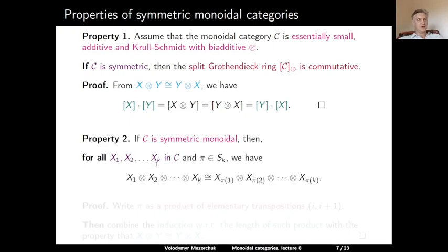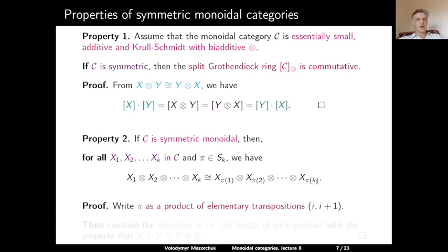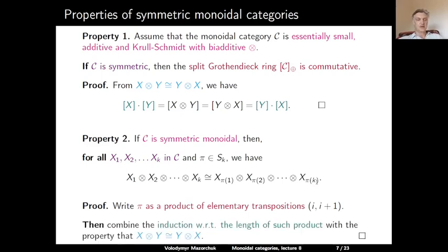Property two: if C is symmetric monoidal, then for any objects X1, X2, ..., XK in C and any permutation pi in S_K, the tensor product X1 ⊗ X2 ⊗ ... ⊗ XK is isomorphic to X_{pi(1)} ⊗ X_{pi(2)} ⊗ ... ⊗ X_{pi(K)}. So the tensor product of objects does not depend on the order of the factors. Proof: write pi as a product of elementary transpositions of the form (i, i+1), and for each elementary transposition use the isomorphism X ⊗ Y ≅ Y ⊗ X, proceeding by induction on the length of the decomposition.